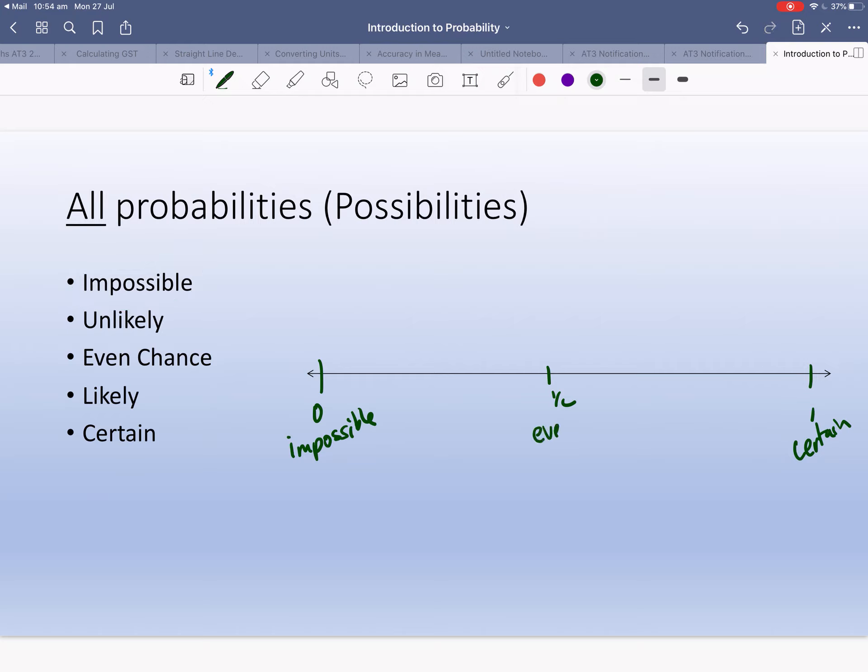In the middle is even chance. So tossing a coin and getting heads is an even chance because you've got a 50-50 chance of getting heads or tails. Now up here, I'm going to change the color, we're going to go likely. And this one's unlikely.